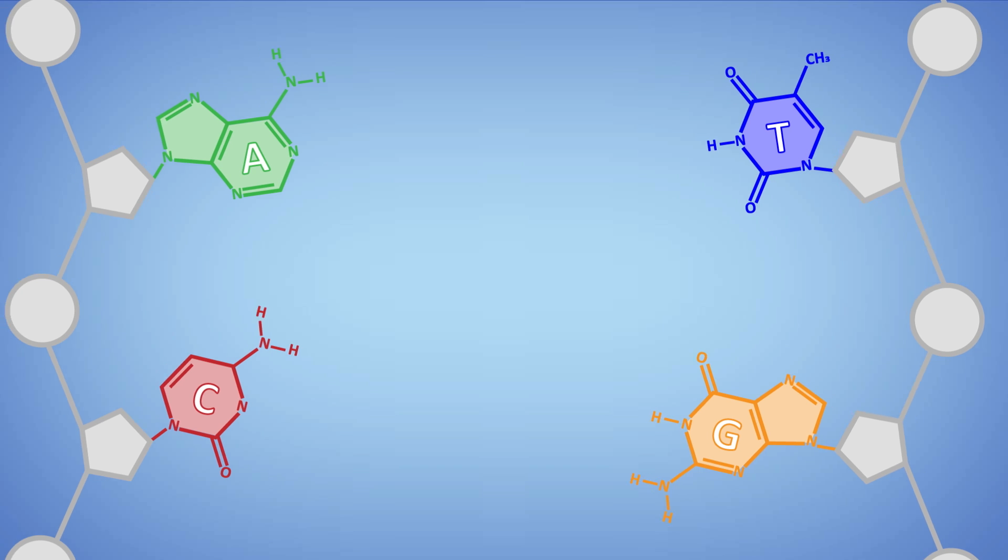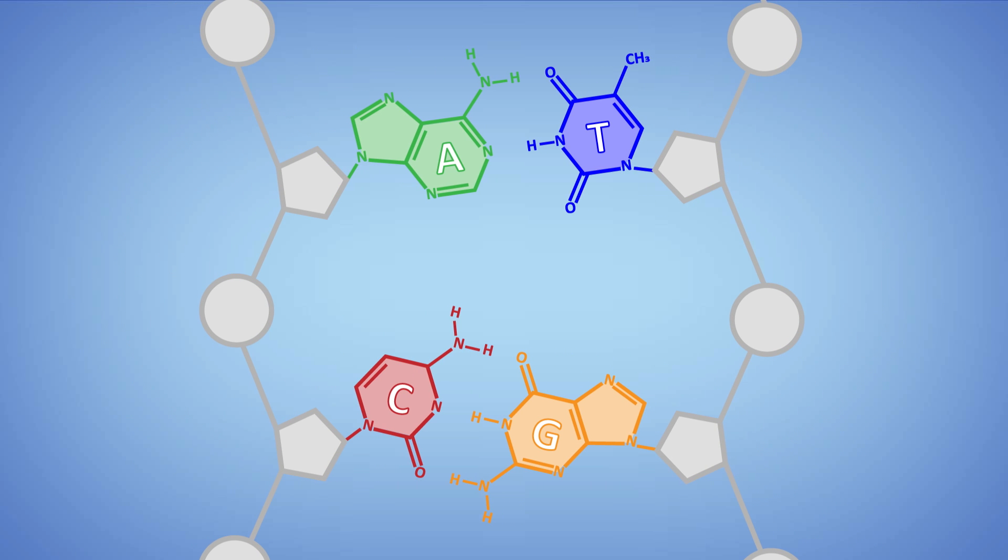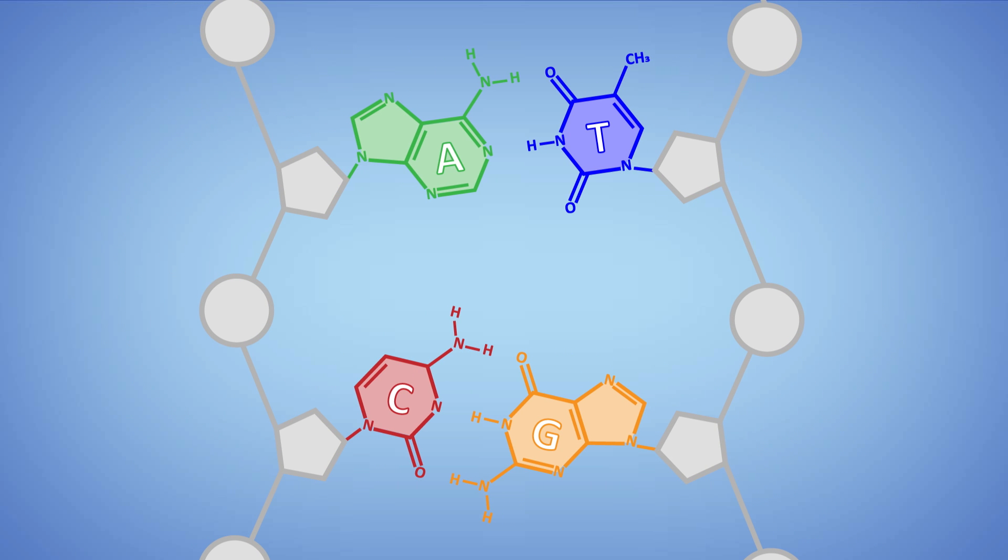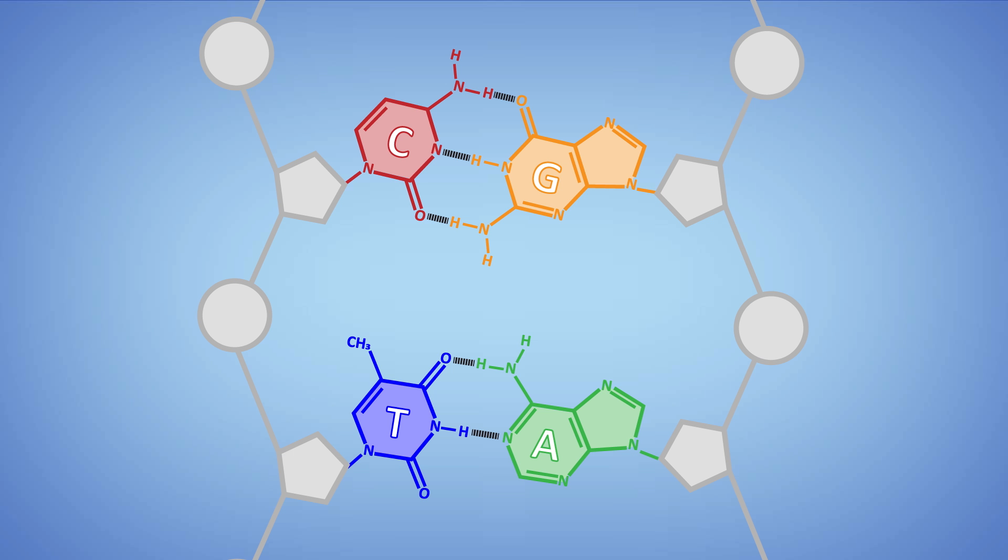So how do we find our genetic needles in our haystack of DNA? A lot of it depends on the fact that our DNA is composed of two complementary strands that form a double helix. An A on one strand will always bind to a T on the other, and a C on one strand will always bind to a G on the other. This means that if you know the sequence of one strand, you always know how to replicate the other half.